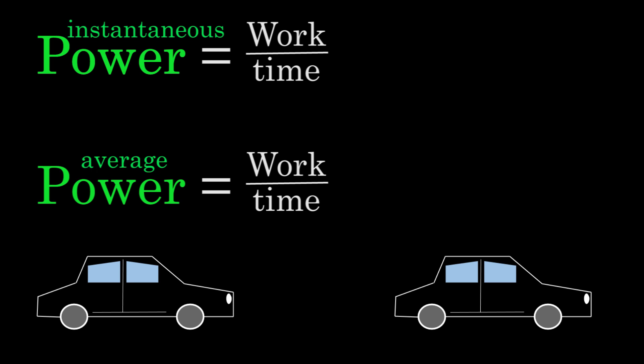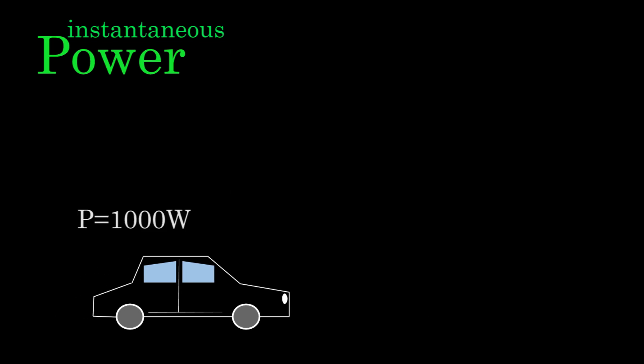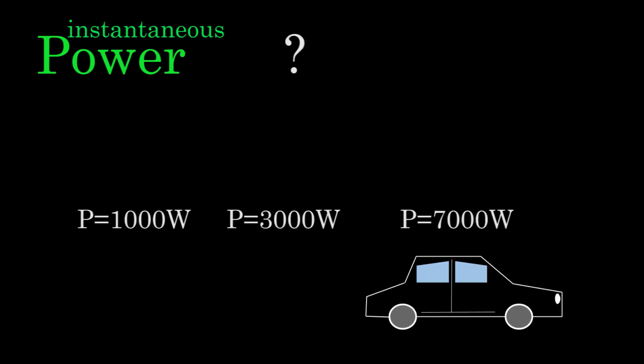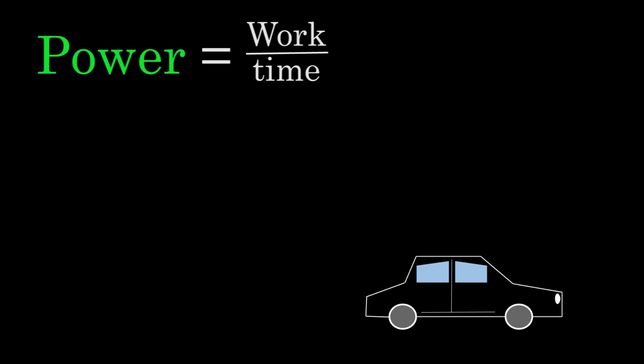Let's say you weren't so lucky and the instantaneous power was changing as the car progressed. Then how would you find the instantaneous power? Well, we know that power is just the work per time. So something we can try is to plug in the formula for work, which looks like fd cosine theta. And then divide by the time.